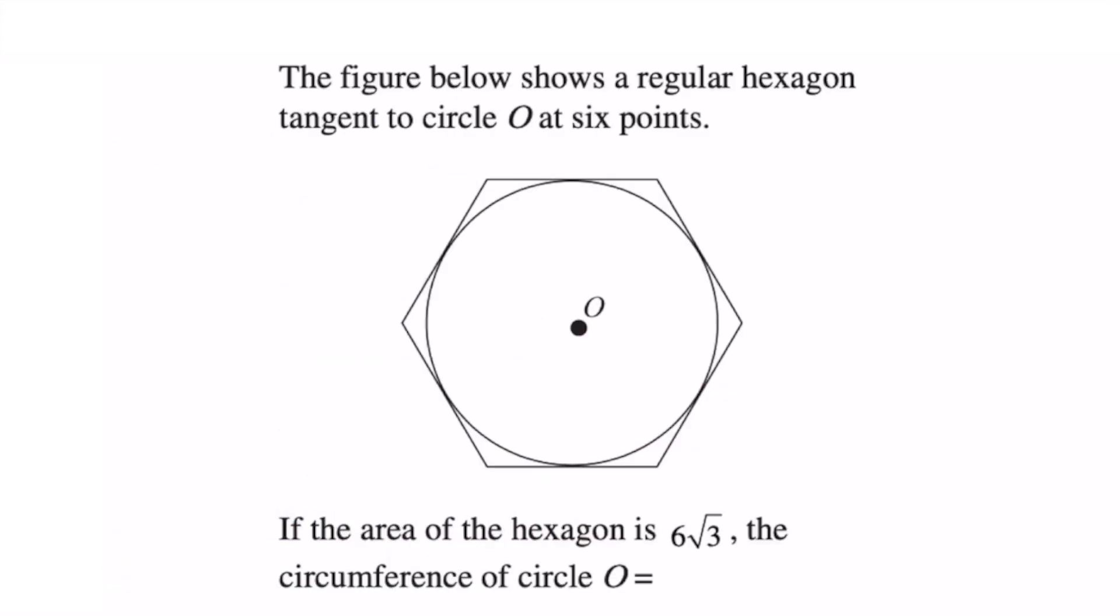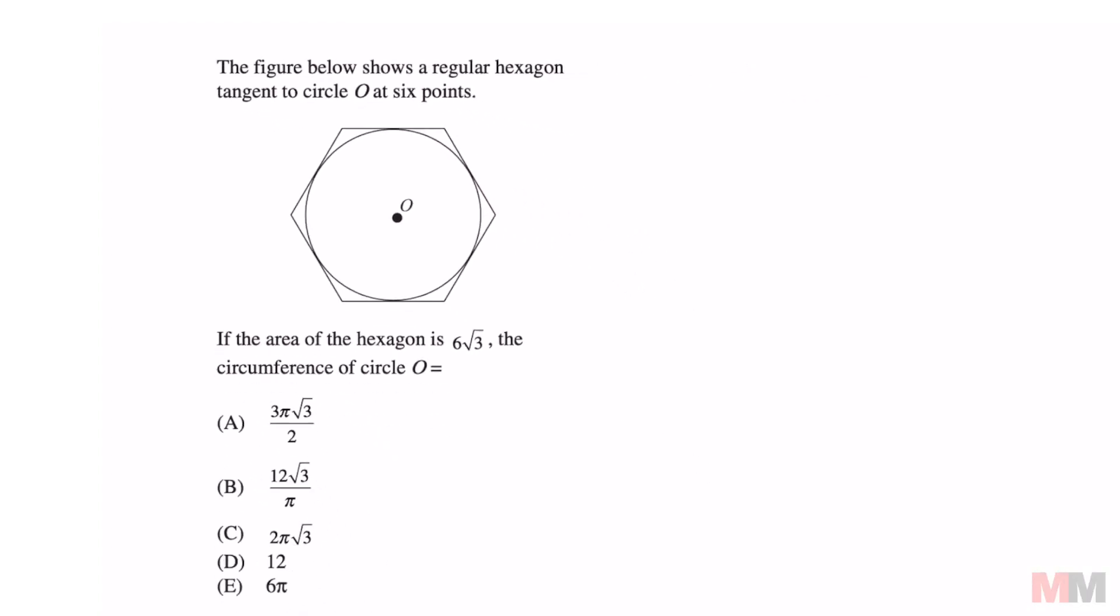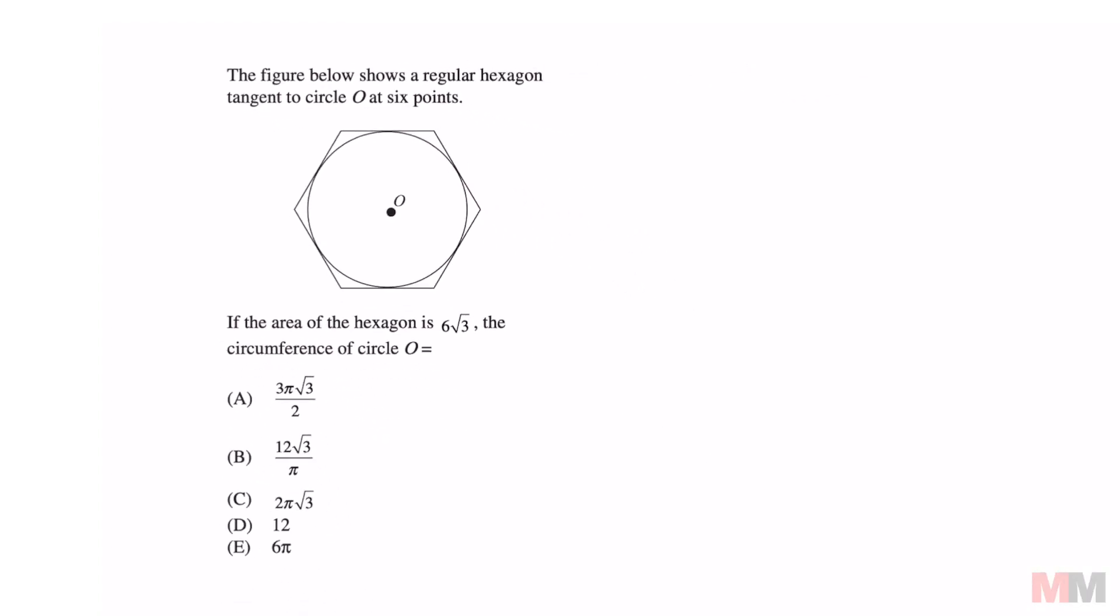The figure below shows a regular hexagon tangent to circle O at six points. If the area of that hexagon is 6√3, the circumference of circle O is which one of these choices.